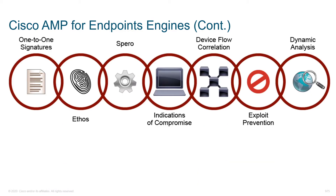This shows the flow our application uses when analyzing a piece of malware and trying to determine if it's malicious. If a file comes in and we think it might be malware, we do a one-to-one comparison and ask: have we seen this file before? That can immediately lead us to a known good or known bad scenario.